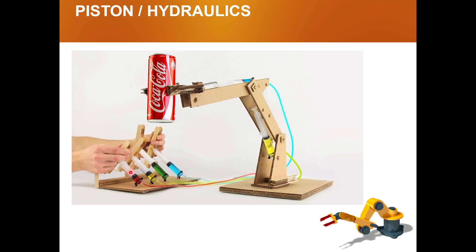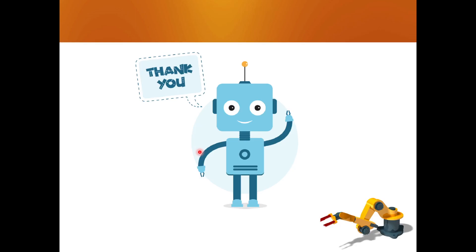Once you press the liquid — since liquid is not compressible — when you press the syringe, the liquid will start flowing through the tube and go into the other syringe. You can see the blue fluid connected here. As soon as you press this blue fluid, it will push the liquid and push the piston backward. By pushing it back, it will hold the can. There are many YouTube videos where you can learn how to make this robot. Thank you so much. These are the basic mechanical components, and we'll be covering more in upcoming videos. Thank you.